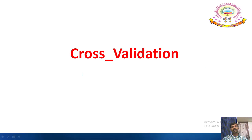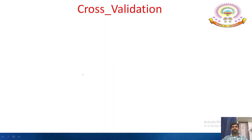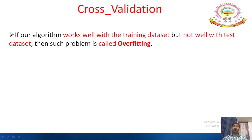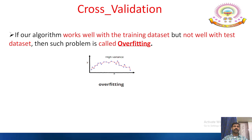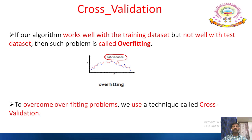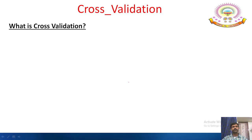Now we look at the next topic: cross validation. If our algorithm works well with the training dataset but not well with the test dataset, that problem is called overfitting. Here, X is the input data, Y is the predicted results. There is high variance evident from this situation. To overcome overfitting problems, we use a technique called cross validation.